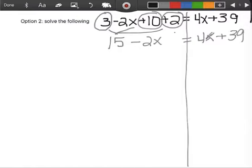So I really have 15 minus 2x equals 4x plus 39. It already looks much smaller, much easier to work with. The next thing I notice is that I have x's on this side and x's on this side. I do not want that.